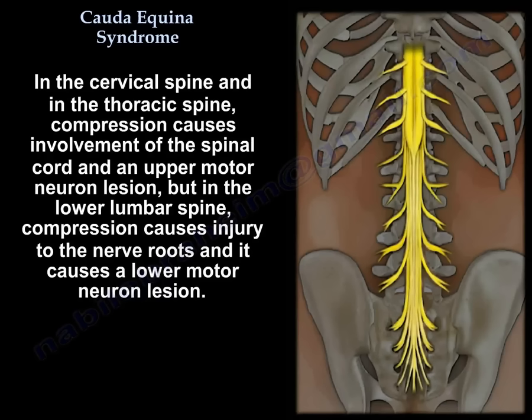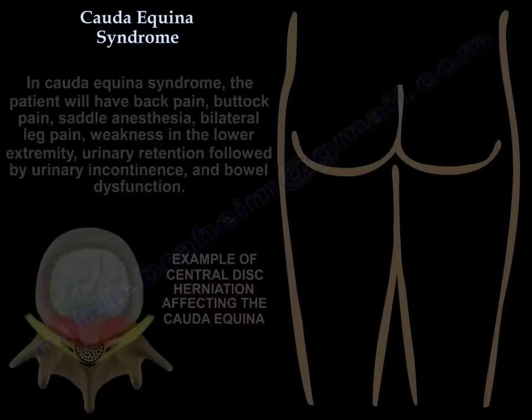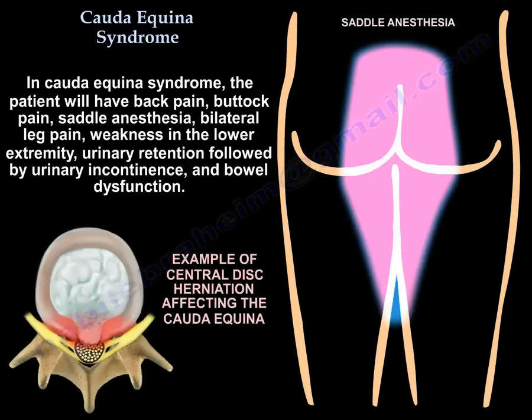In the cervical and thoracic spine, compression causes involvement of the spinal cord and an upper motor neuron lesion. But in the lower lumbar spine, compression causes injury to the nerve roots and a lower motor neuron lesion. In Cauda Equina Syndrome, the patient will have back pain, buttock pain, saddle anesthesia, bilateral leg pain, weakness in the lower extremity, urinary retention followed by urinary incontinence, and bowel dysfunction.